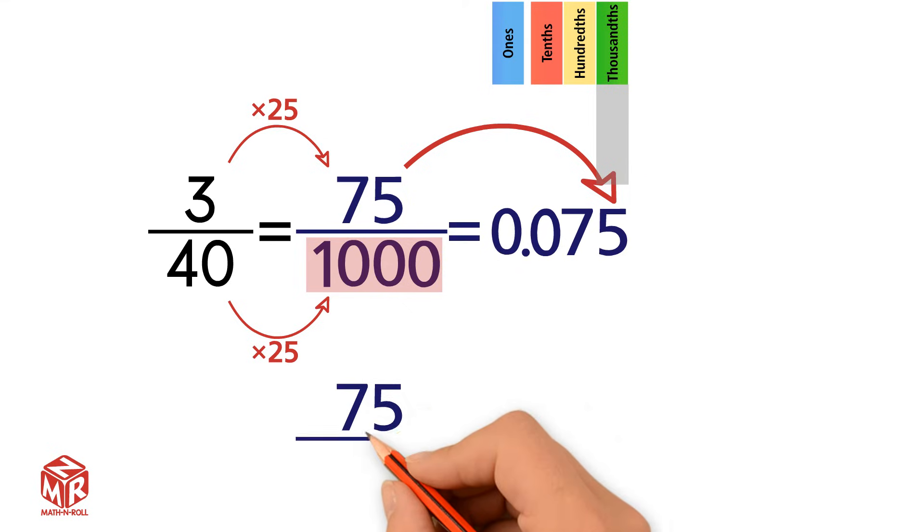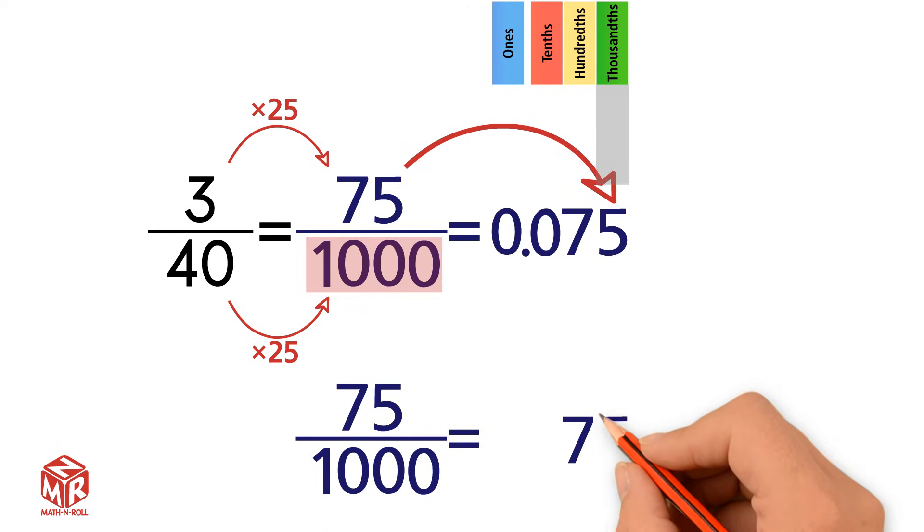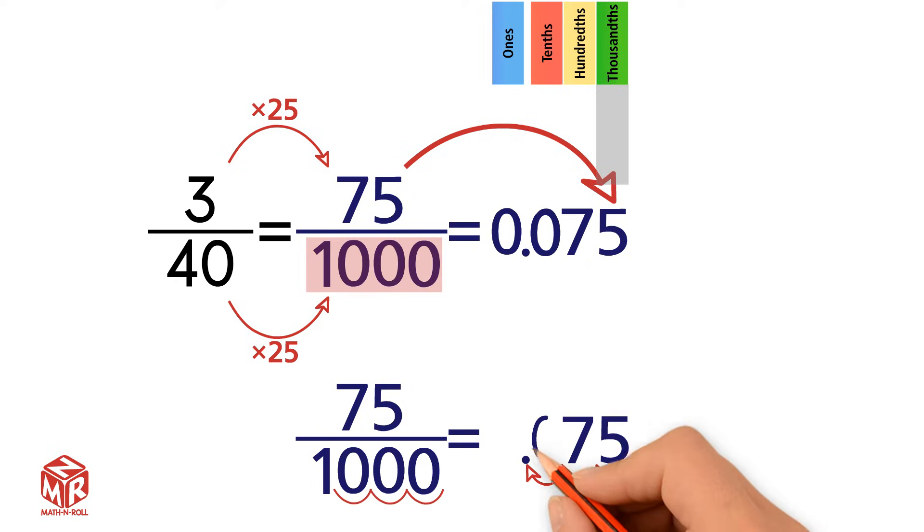Let's convert 75 thousandths using the second method. First, copy the numerator. Then, we count how many zeros are in the denominator. 1, 2, 3. Next, imagine a decimal point to the right of the 5. Then, move that decimal point over to the left three spaces. 1, 2, 3. In the empty spot, add a zero as a placeholder. Finally, add a zero to the left of the decimal point.